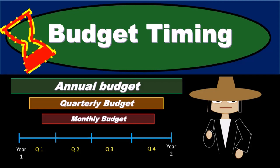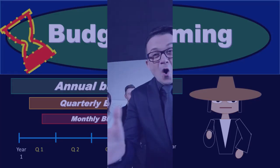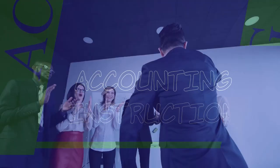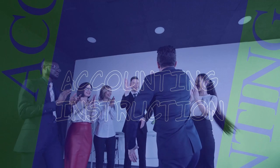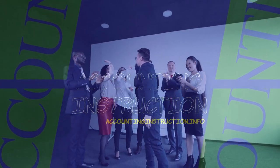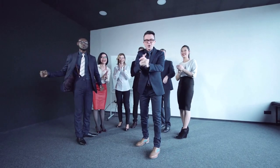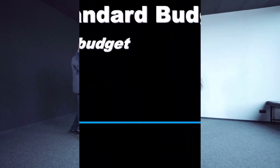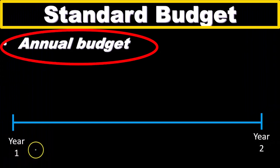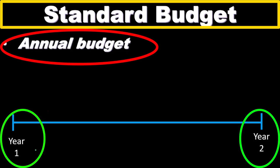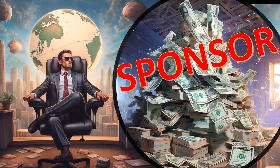In this presentation we will discuss budget timing. Typically, the standard budget for most companies will cover a year, so we'll have the annual budget, which will cover the next year. We're looking into the future — of course, we're doing the budgeting process and looking at the future year.